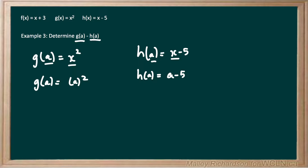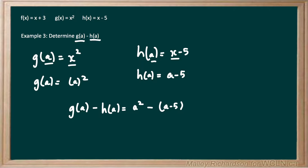Now that we have g of a and h of a, we can subtract these two values. So we have g of a minus h of a: a squared minus (a minus 5). We have a negative sign outside the brackets, so we use our distribution laws and multiply negative one by everything inside. Negative 1 times a gives negative a, and negative 1 times negative 5 gives positive 5. So g of a minus h of a equals a squared minus a plus 5.